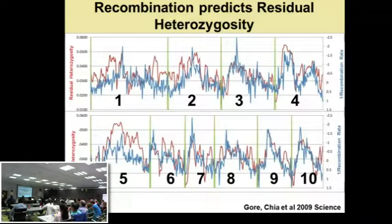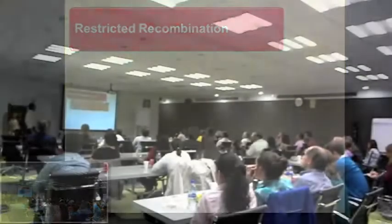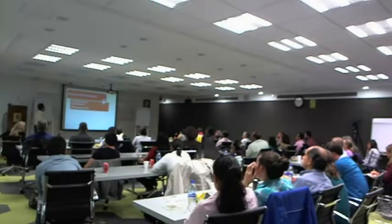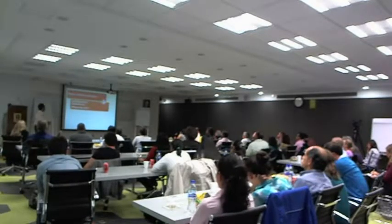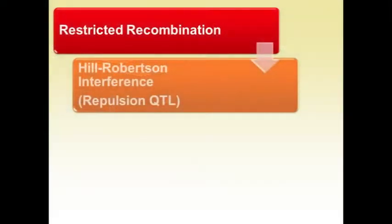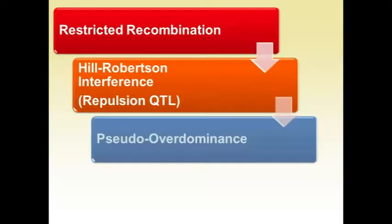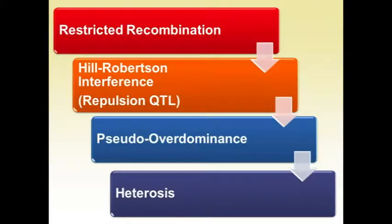Recombination explained about 32% of the variance for residual heterozygosity, and things like gene density and diversity explained nothing. This essentially goes back to that very old model: restricted recombination gives rise to repulsion QTL. The population genetics term for this is Hill-Robertson interference. That leads to pseudo-overdominance — people do see overdominance, but that's because of a lack of recombination — and that's giving rise to heterosis.